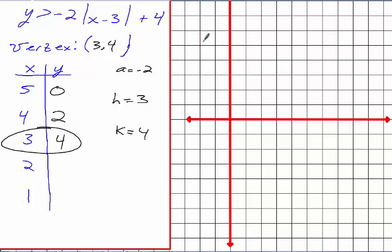So you're okay with finding the vertex — it goes in the middle of your XY chart. Go one or two values above the H and one or two below. So if I'm at 3, I go to 4 or 5. Plug in 2: 2 minus 3 is negative 1, absolute value of negative 1 is 1, times negative 2 is negative 2, plus 4 is 2. Plug in 1: 1 minus 3 is negative 2, absolute value of negative 2 is 2, times negative 2 is negative 4, plus 4 is 0. Which is what we expect because this is a V shape — the lines grow at the same rate on both sides of the vertex.